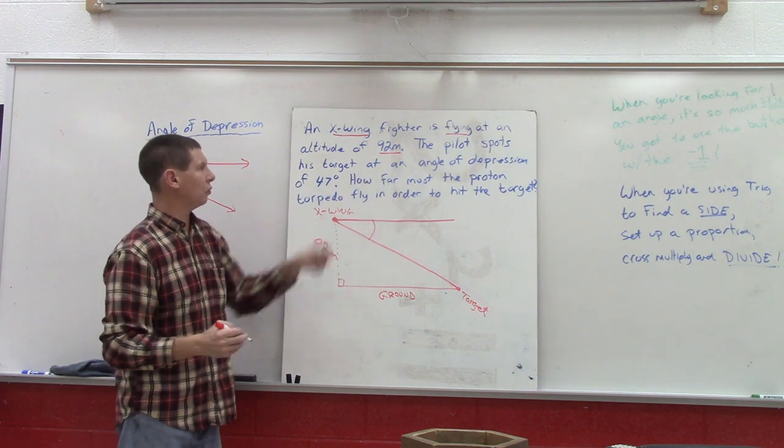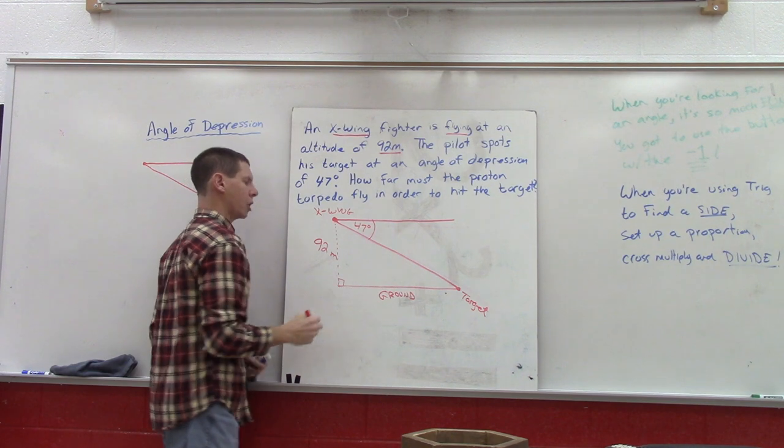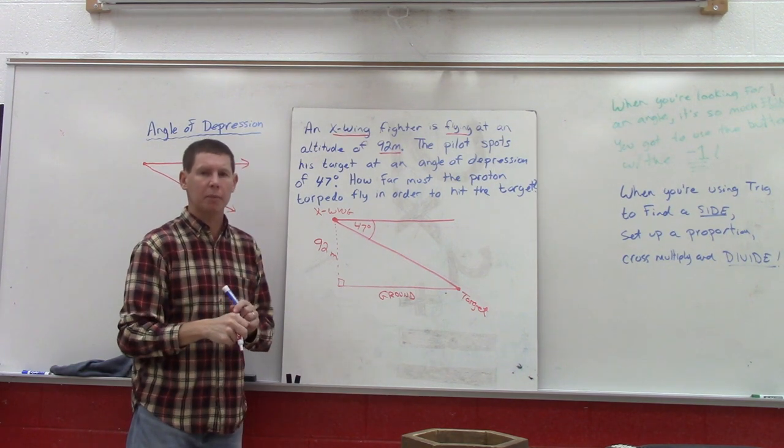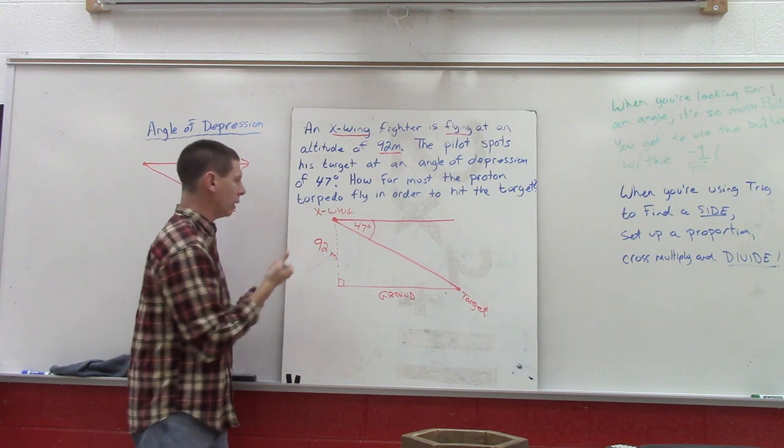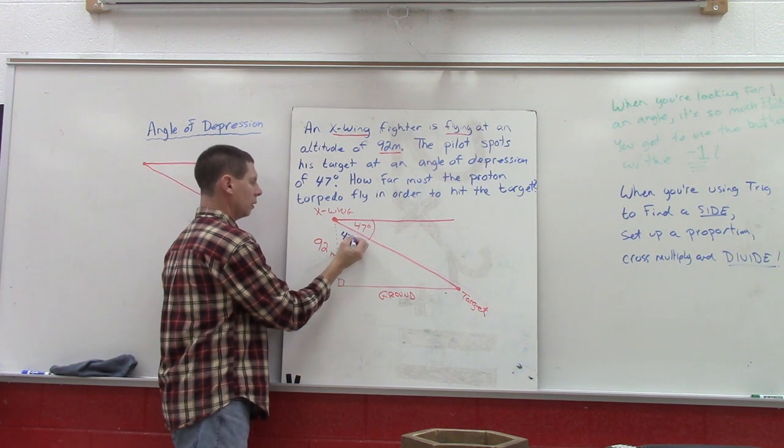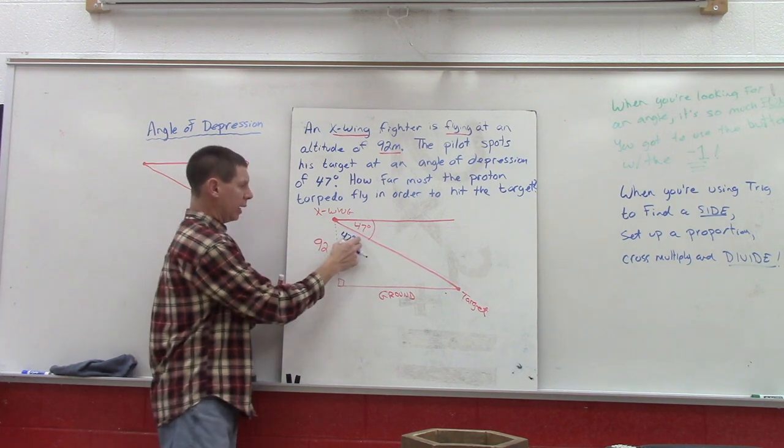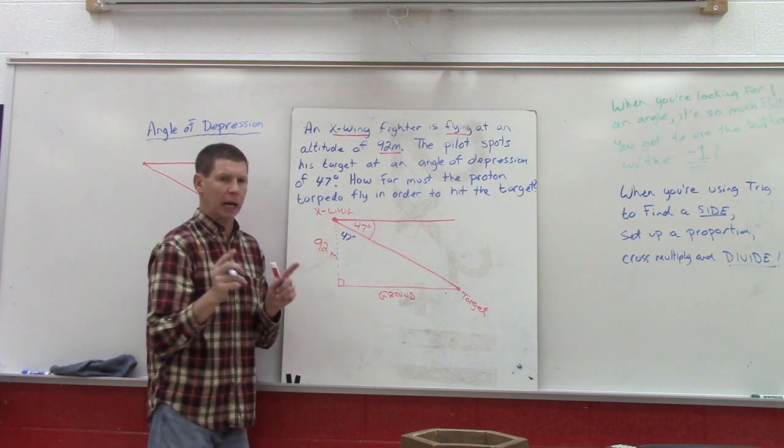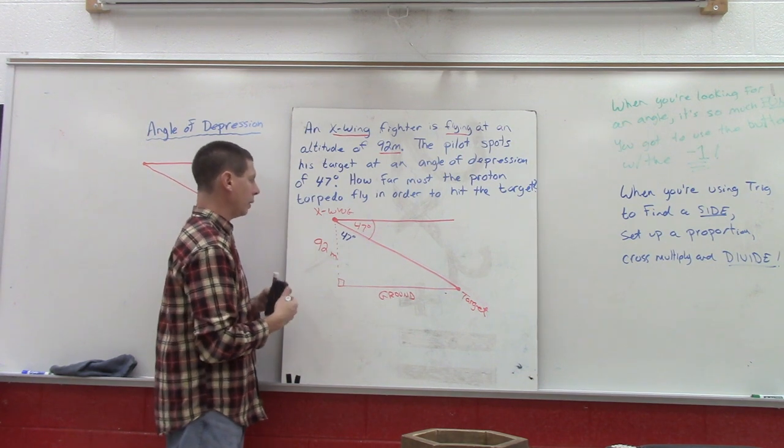There's always a common mistake. People understand angle of depression means down, so they want to put the 47 here. No bueno. If you think of this angle, that angle does not have a horizontal line that creates it or ray, so we have to scratch that.